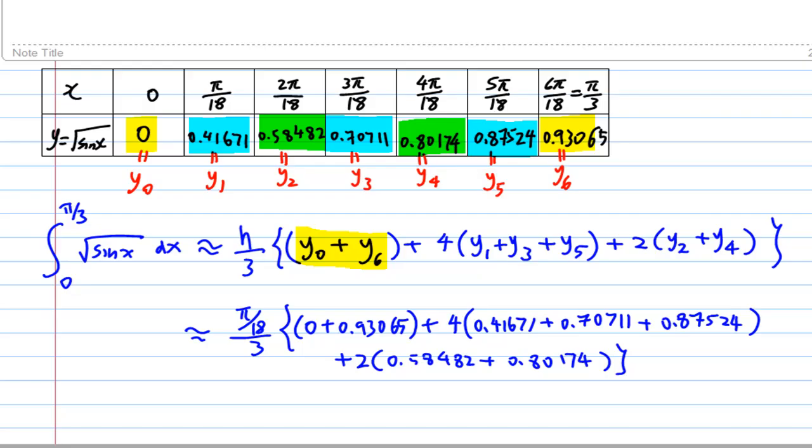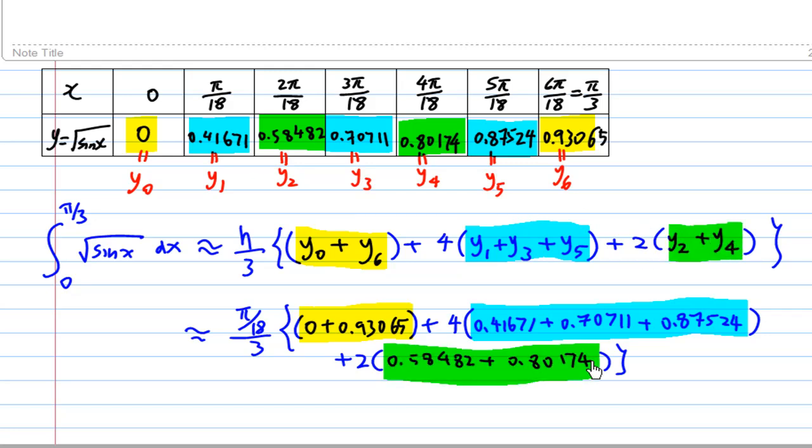Let me use some color to indicate where these points are. y0 and y6 will be here, y1, y3, and y5 are here, and y2 and y4 are here. If you press the calculator, you'll find that the answer up to 3 decimal places is 0.681. That is the end of this recording.